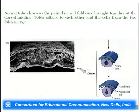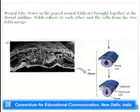The neural tube closes as the paired neural folds are brought together at the dorsal midline — the folds adhere to each other and cells from the two folds merge. The neural tube separates from the epidermal ectoderm, with neural crest cells remaining at the junction. The epidermal ectoderm from the neural folds fuses together to provide the covering, and the neural tube is internally enclosed.